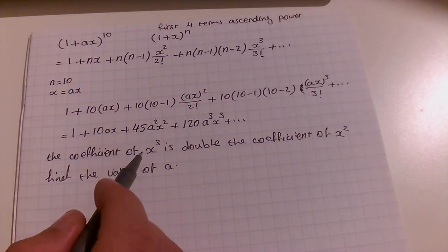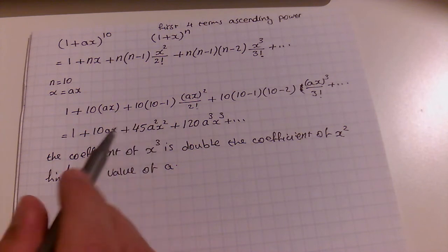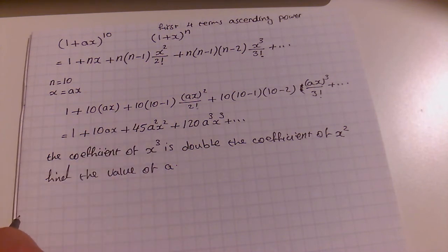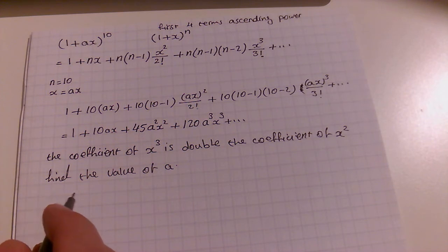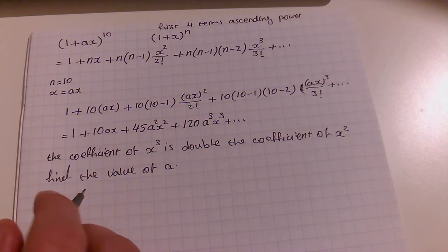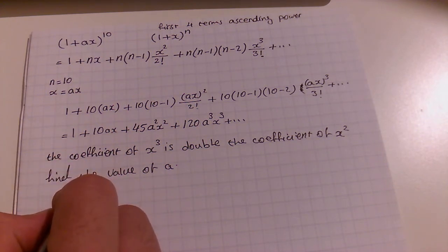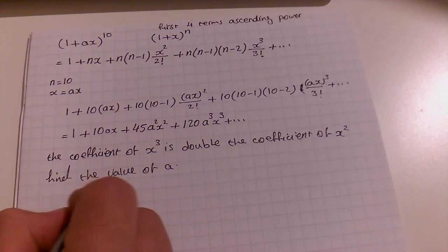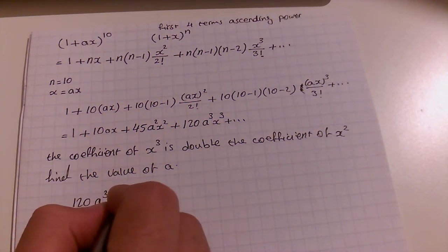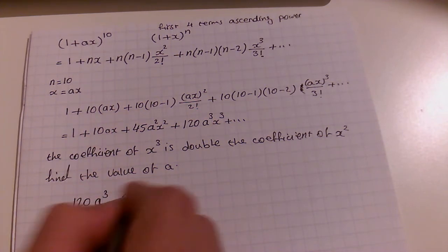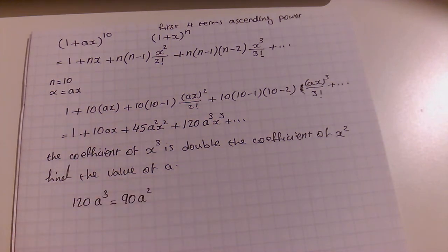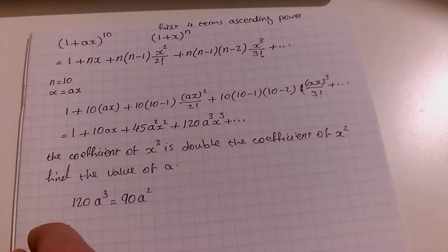Continuing: 10 times 9 times 8 is 720, divided by 3 factorial which is 6, gives 120. So the third term is 120A cubed x cubed. We stop here since only the first four terms are required: 1 plus 10Ax plus 45A squared x squared plus 120A cubed x cubed.